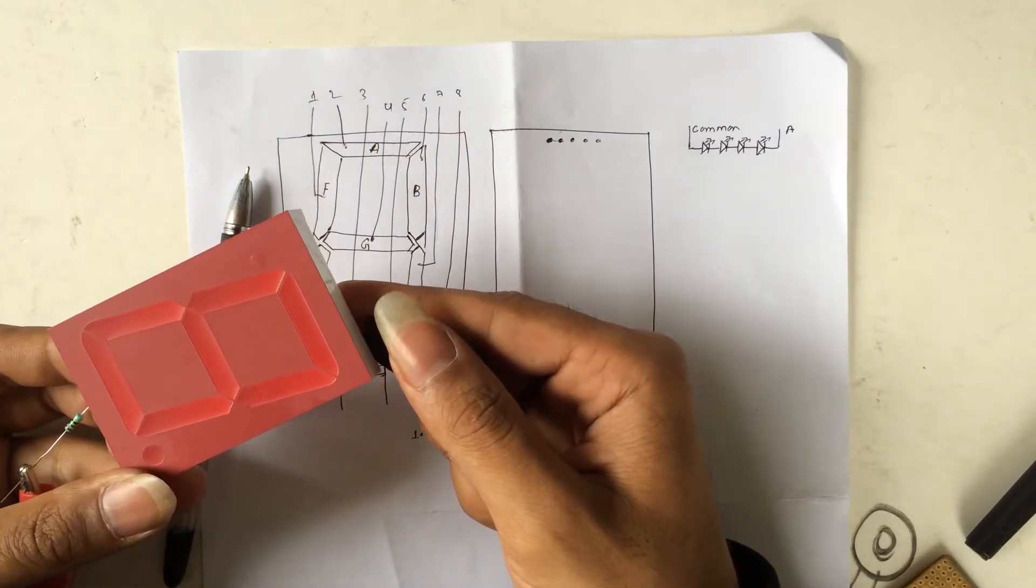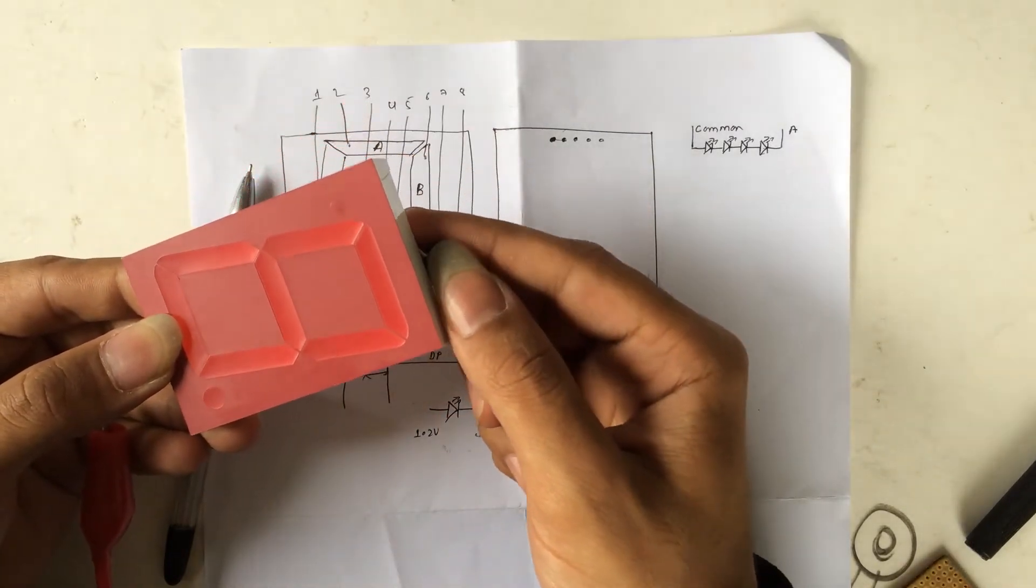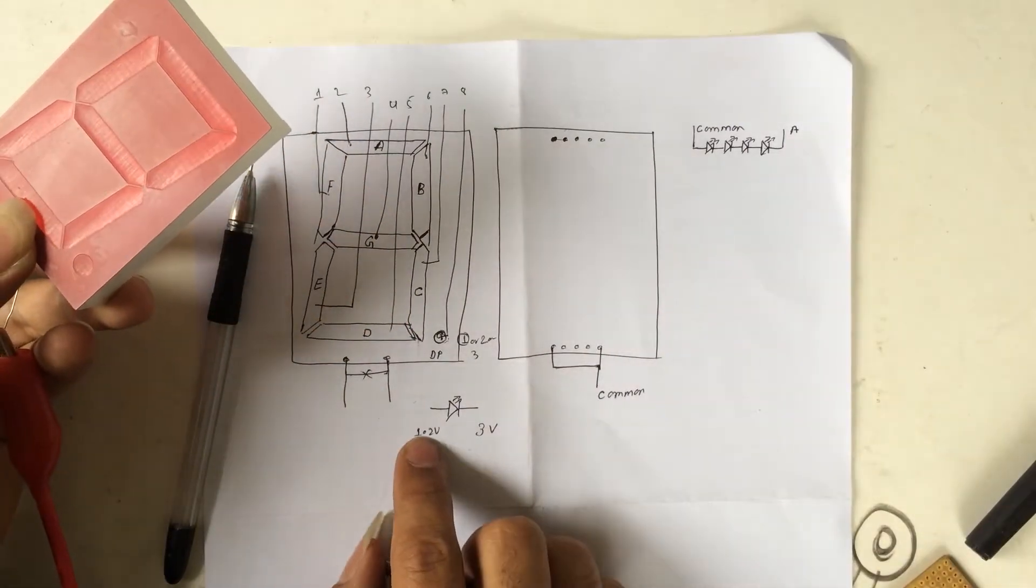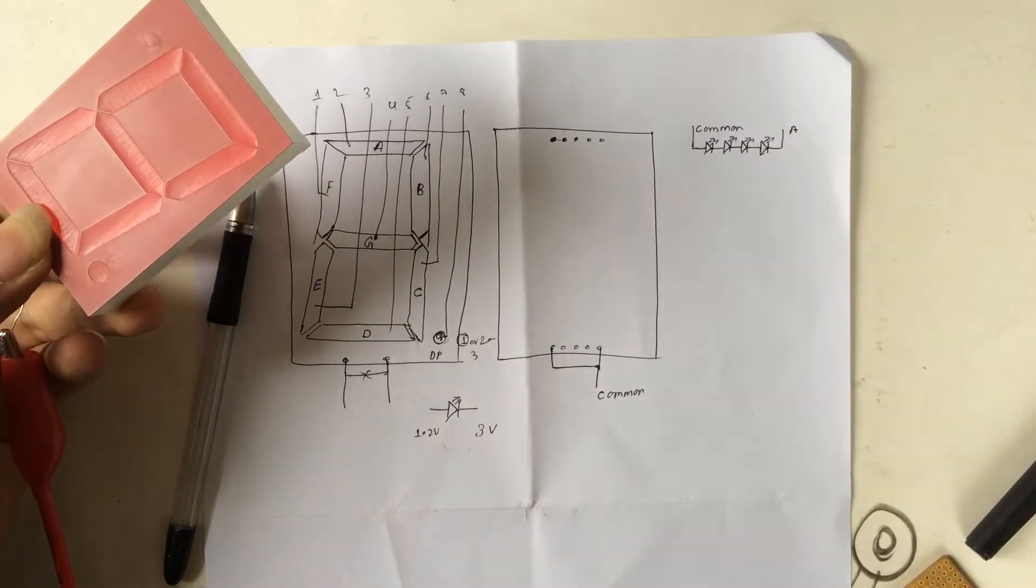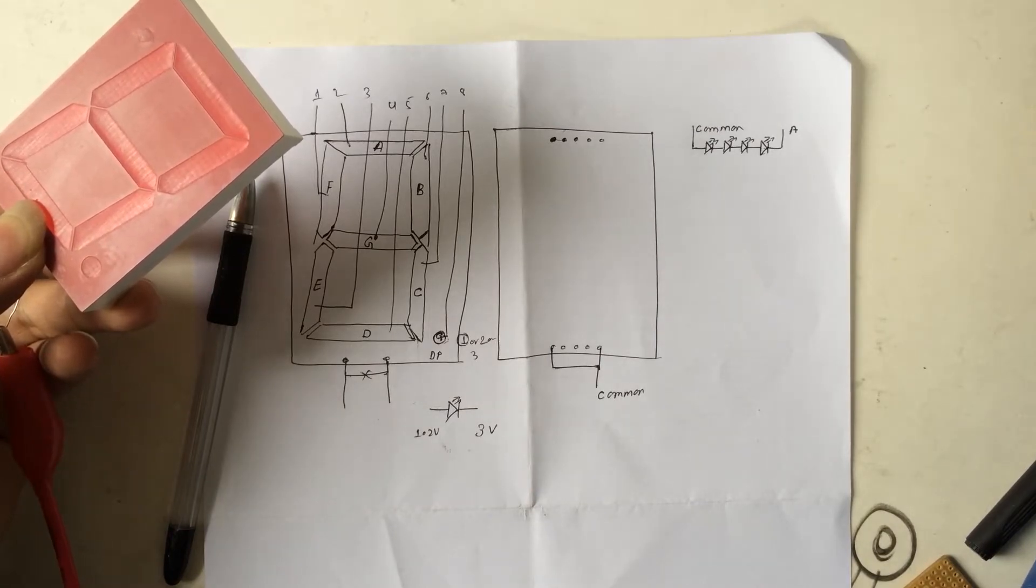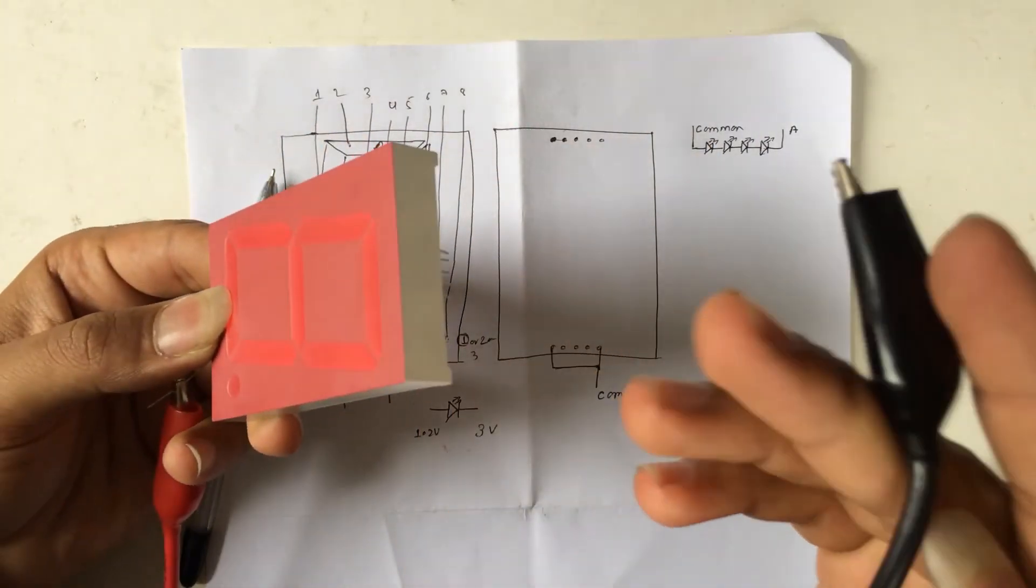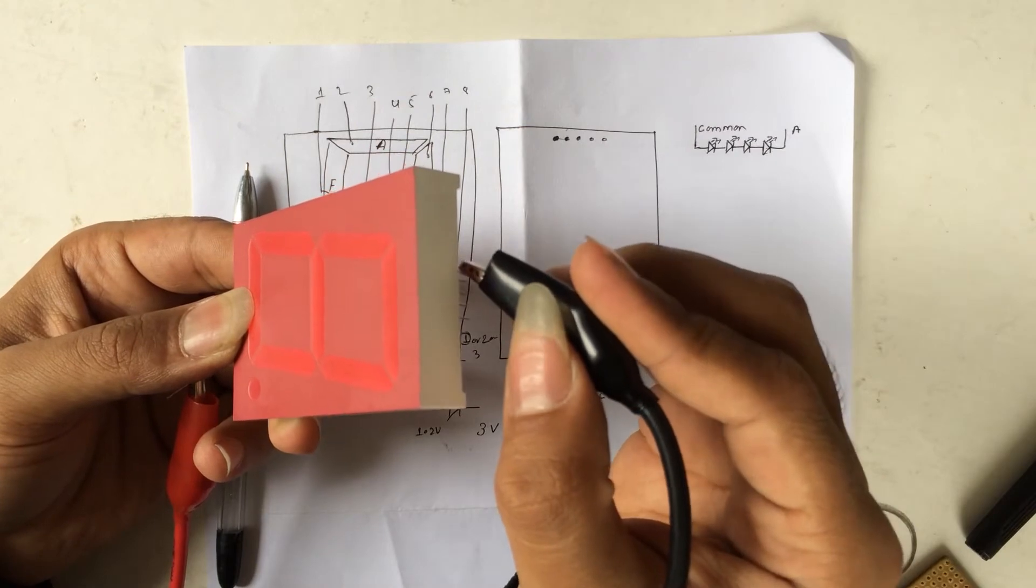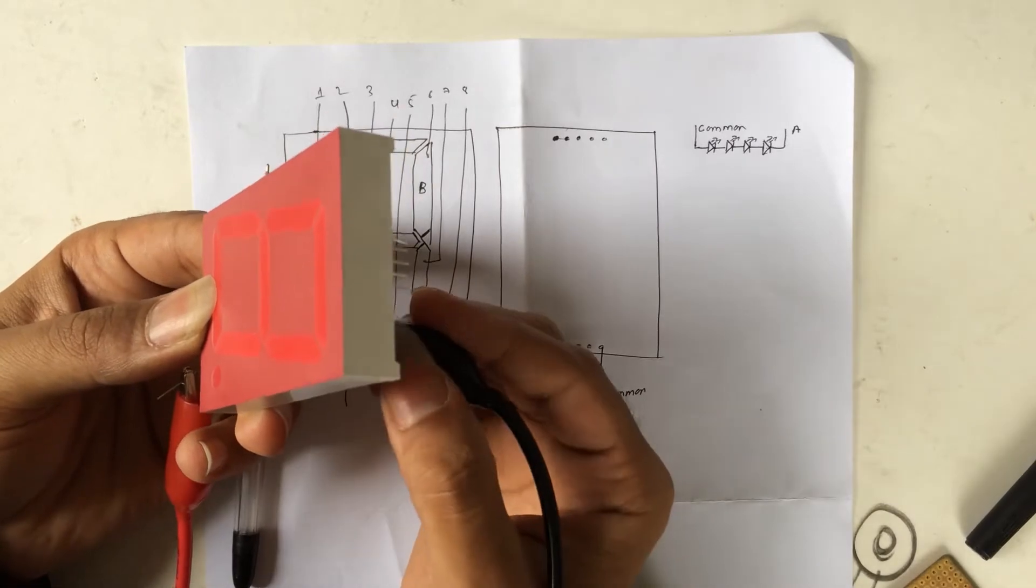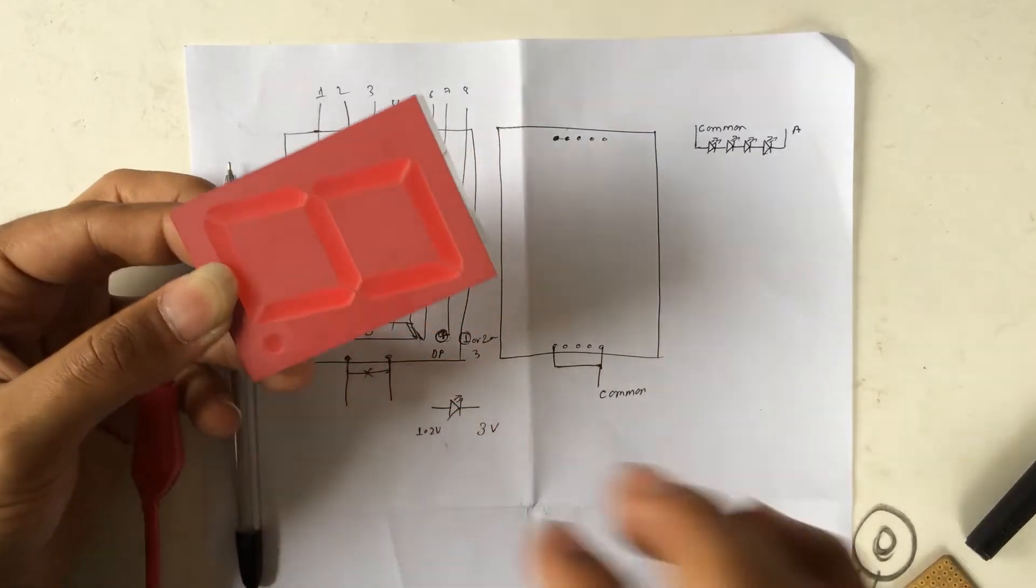I will start from the topmost which is right here. None of these make this LED glow at 1.5 volt and 10 ohms resistor. So now I will go to 3 volt which is double the amount. And again start testing from the first pin. So none of these make this LED glow.